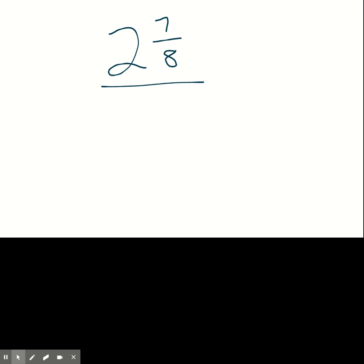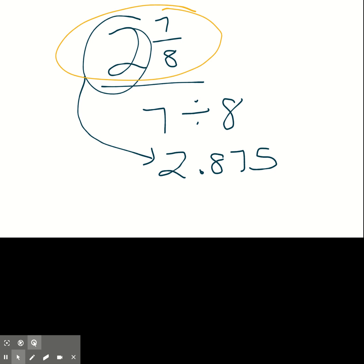What to do if you have a mixed number like this one? Just keep the two, leave it alone for now. Just leave it and do seven divided by eight in your calculator. You're going to get 0.875, but don't forget the two. Just put it down here. So two and seven eighths is the same as 2.875.